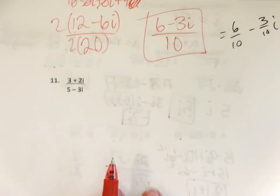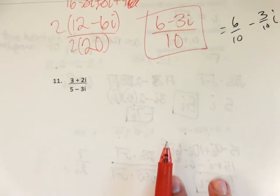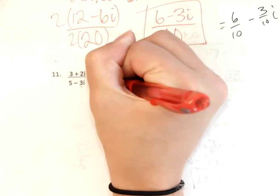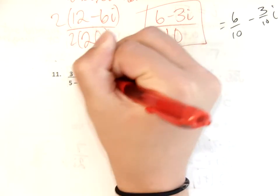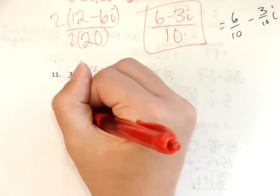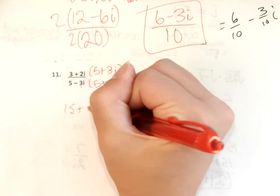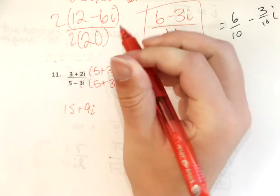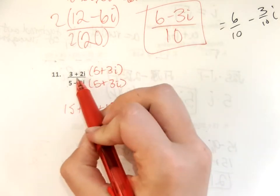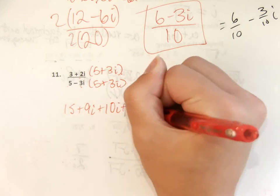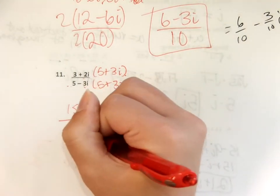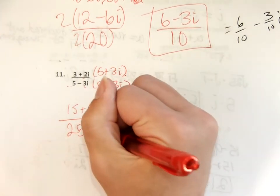Now we have bigger numbers. We use the conjugate again. The conjugate of five minus three i is five plus three i. So multiply the top and bottom by the conjugate. For the numerator: three times five is fifteen, three times three i is nine i, two i times five is ten i, and two i times three i is six i squared.